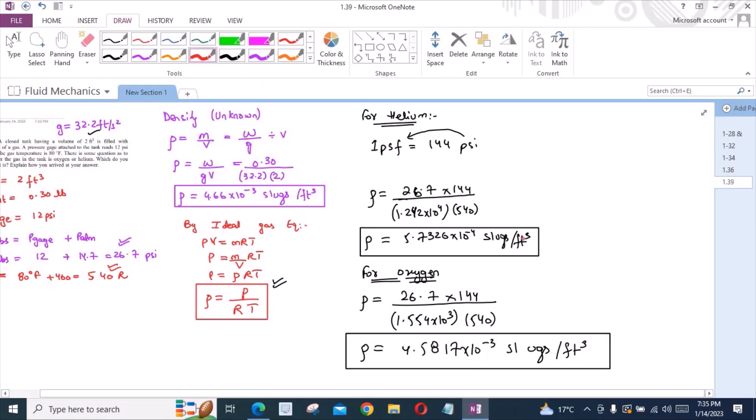By looking at these two values of the densities, we could clearly conclude that the density of unknown gas closely matches with the density of oxygen. So our conclusion is, gas in the tank is oxygen.